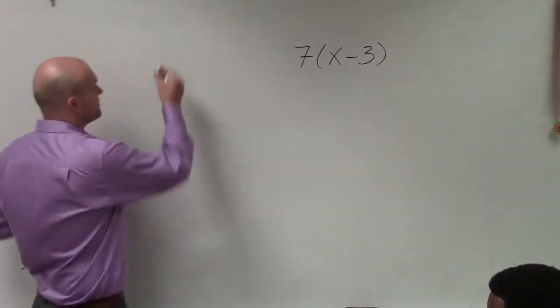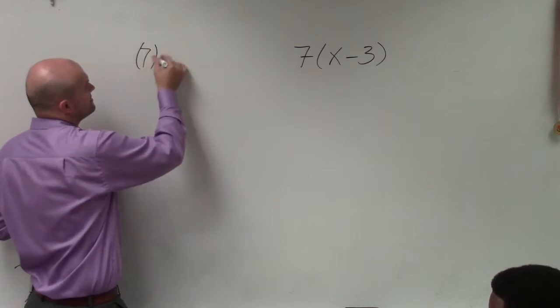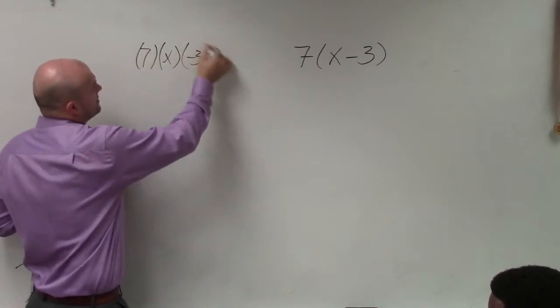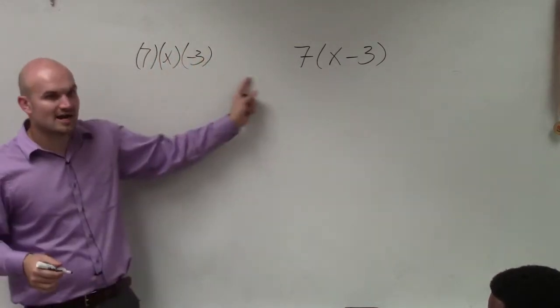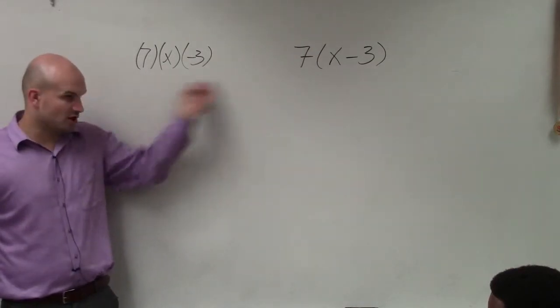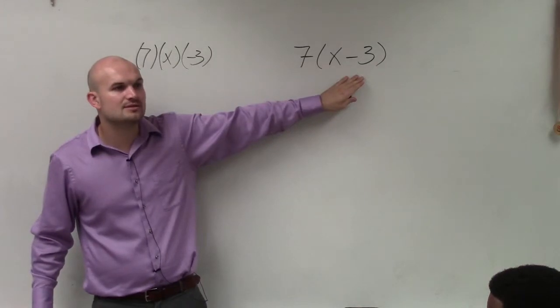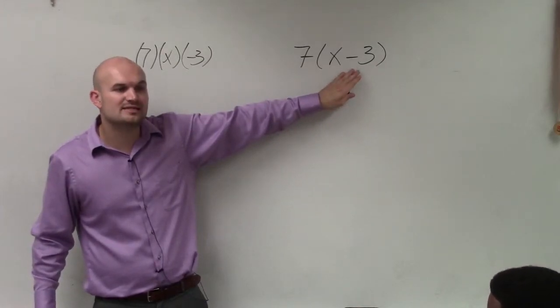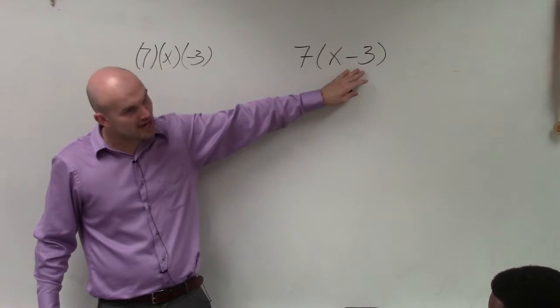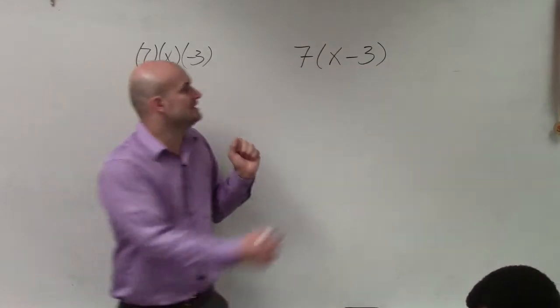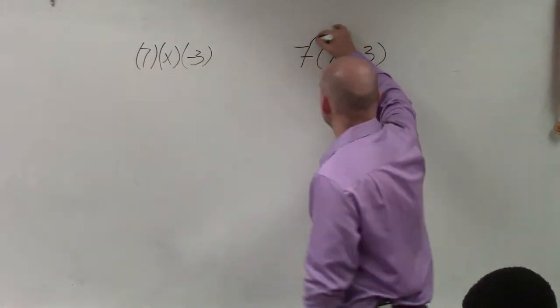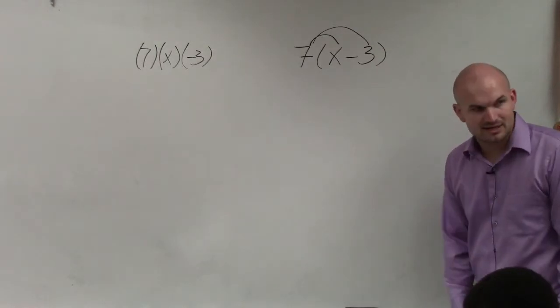This is very different than if I wrote the problem 7 times x times negative 3. That's the product of all three numbers, which you just multiply straight across. However, when you have two terms inside the parentheses separated by addition or subtraction, then you need to multiply the 7 times the x and the 7 times the negative 3.